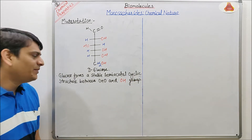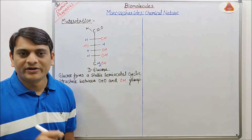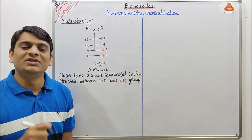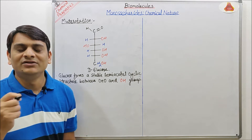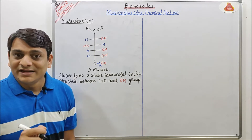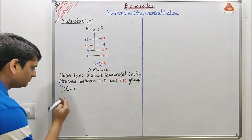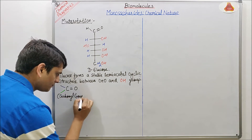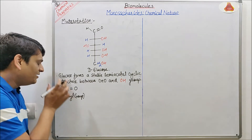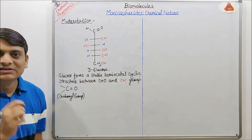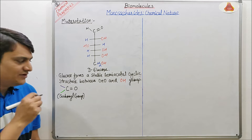I will explain the mechanism of this reaction because monosaccharides contain either an aldehyde group or a ketone group. If it contains an aldehyde group then it is known as aldose. If it contains a ketonic group then it is known as ketose. In both conditions it contains a carbonyl group. When this carbonyl group reacts with the alcoholic group present in that particular monosaccharide, the reaction proceeds as follows.